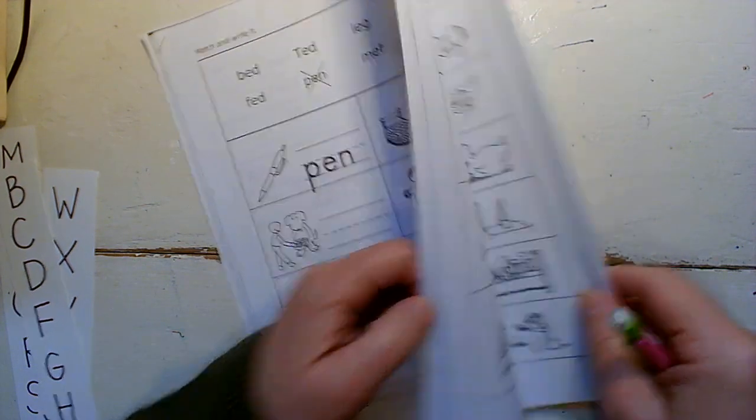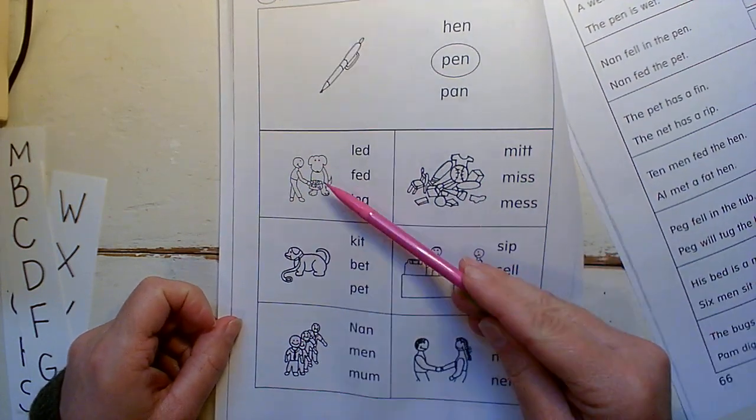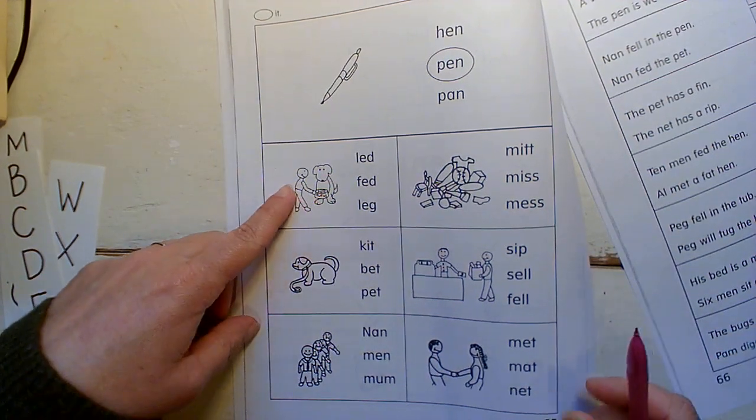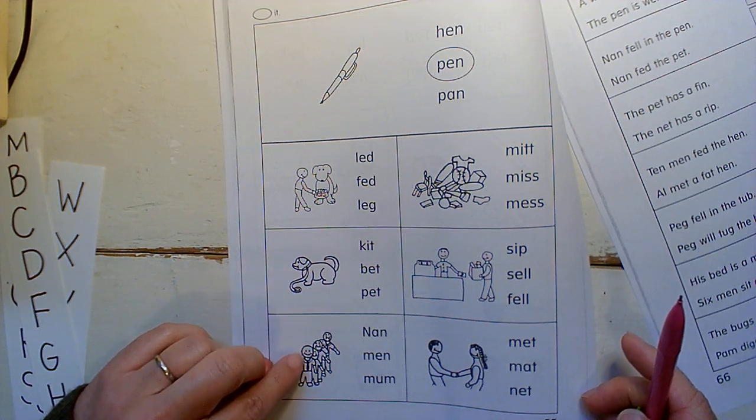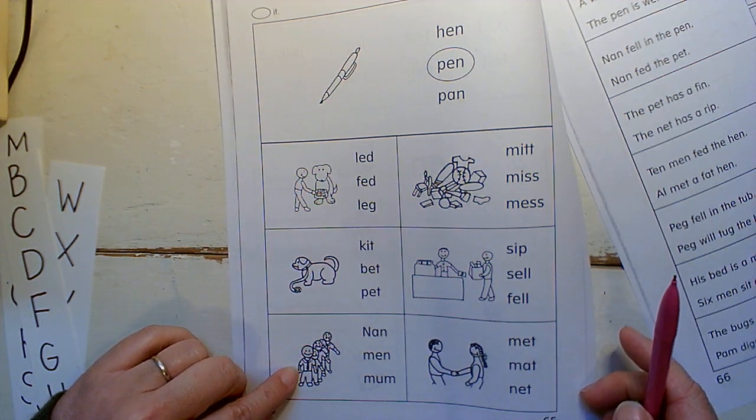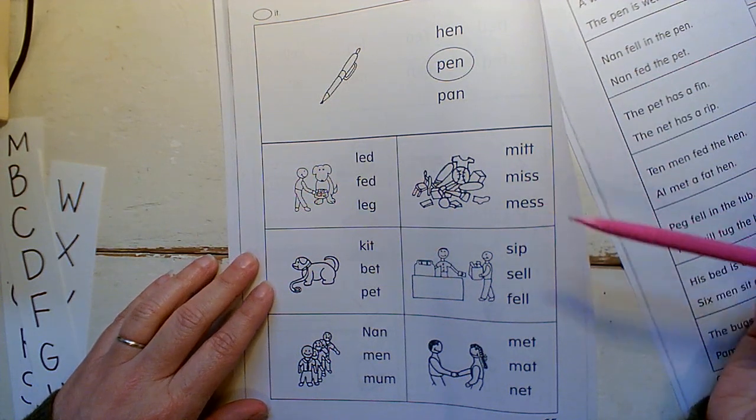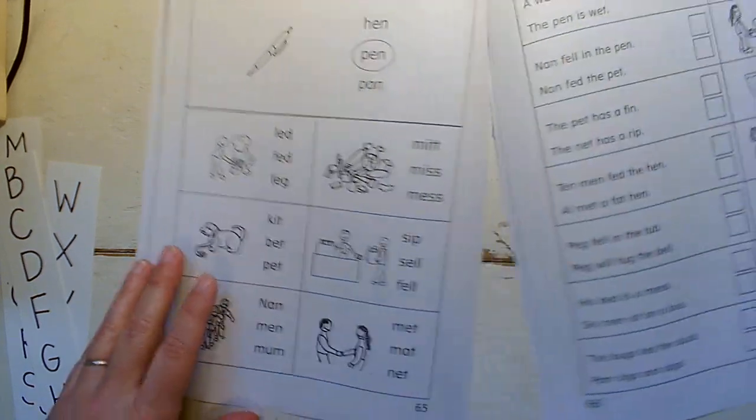Okay. Let's go on to the next page. For these ones, you will look at the picture and circle the word. So there's someone that you've seen before. Fed. This one is pet. Men. Mess. Sell. Met.